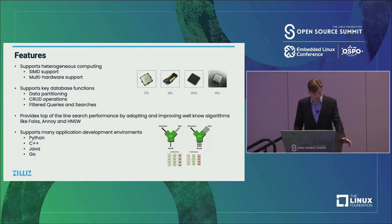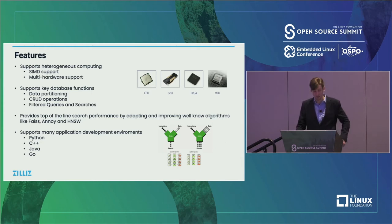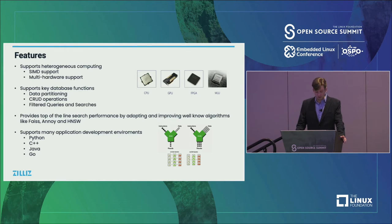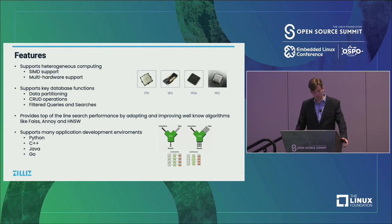Now I'll go over some features Milvus supports. First, it supports heterogeneous computing: many x86 instruction sets including SSE, AVX2, and AVX512, NVIDIA GPUs, and we're currently working on FPGAs, MLUs, and ARM processors. Second, we support key database functions: data partitioning, data sharding, all CRUD operations — creating, reading, updating, and deleting — as well as filtered queries and searches. Third, we provide top-of-the-line search performance based on those libraries — tree-based, inverted file-based, graph-based — which we've implemented and improved. Lastly, we support many development environments: Go, Java, C++, Python, and a RESTful API.